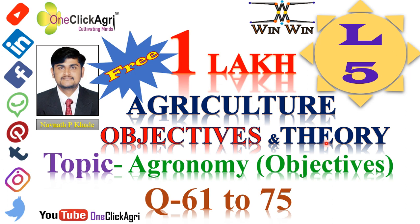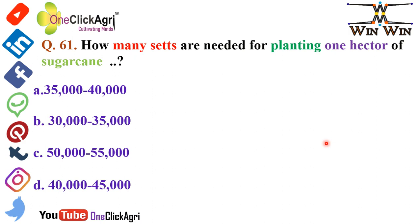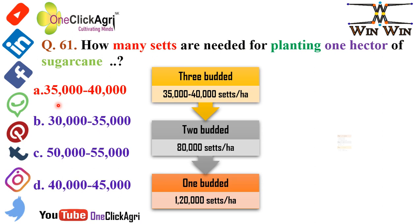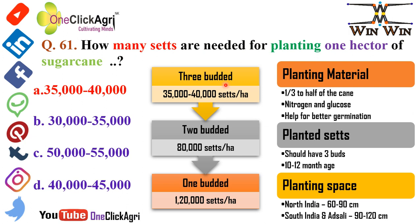Question 61: How many seeds are needed for planting one hectare of sugarcane? The right answer is 35,000 to 40,000. In the chart, three-budded seeds require 35,000 to 40,000 per hectare. Two-budded seeds require 80,000 seeds per hectare, and one-budded or single-budded seeds require 1,20,000 seeds per hectare — sometimes 1,25,000 seeds per hectare. Please remember both values.